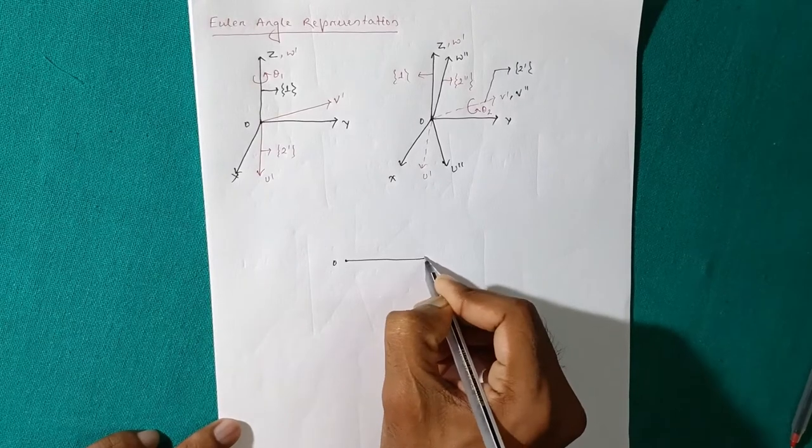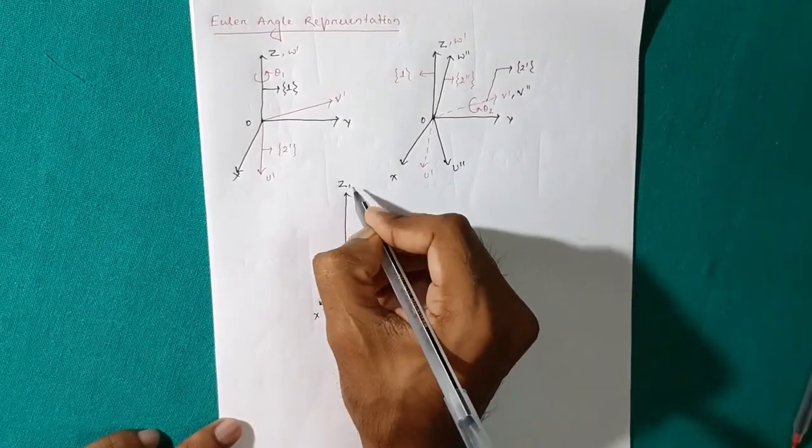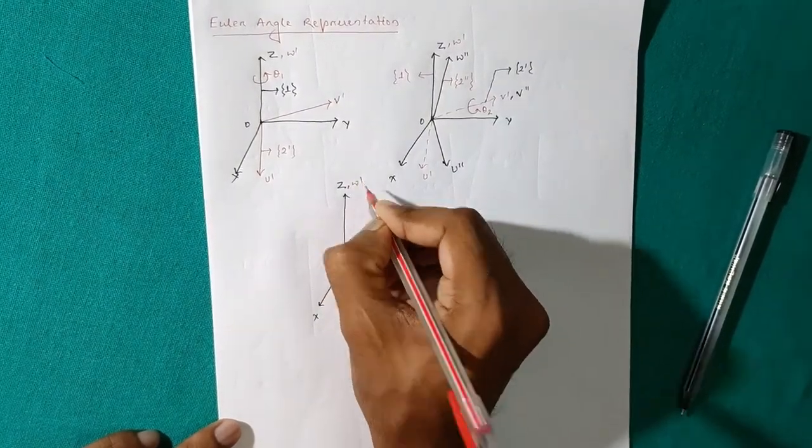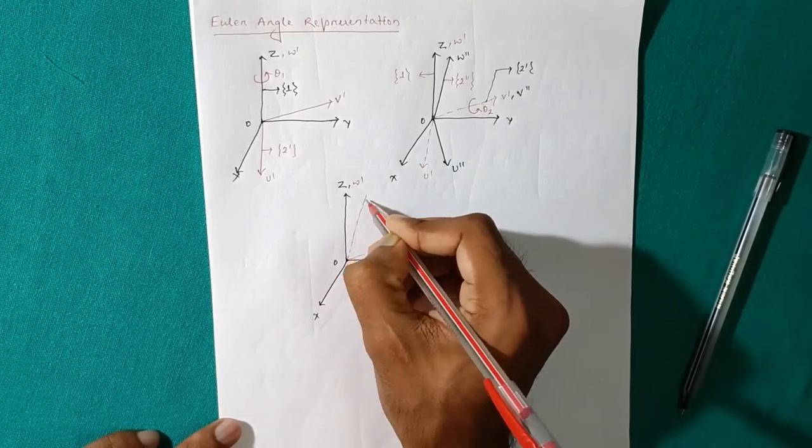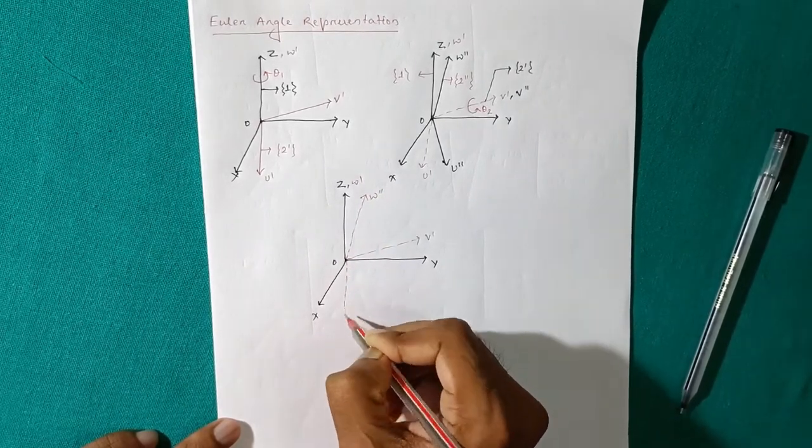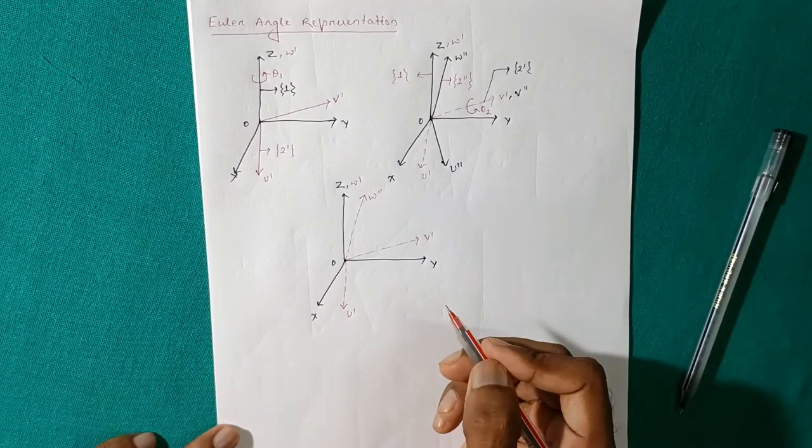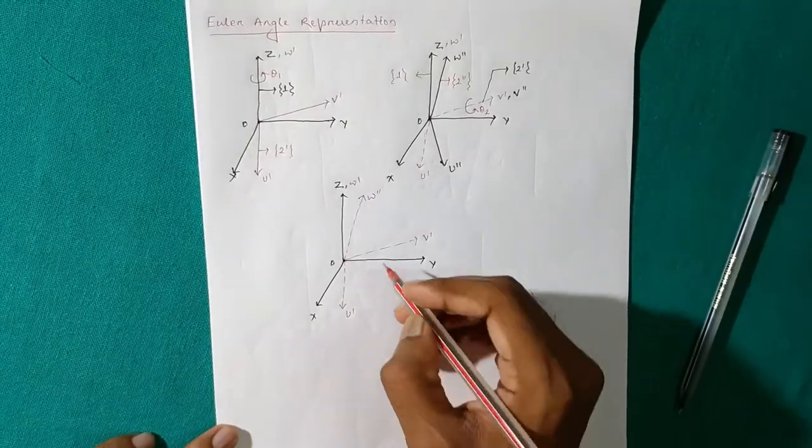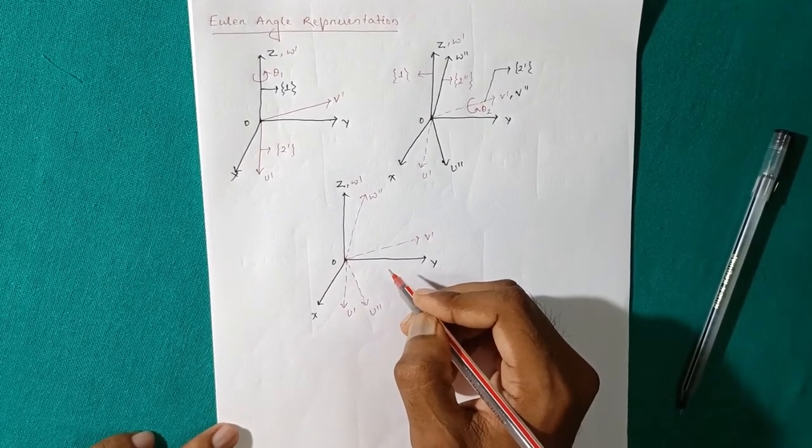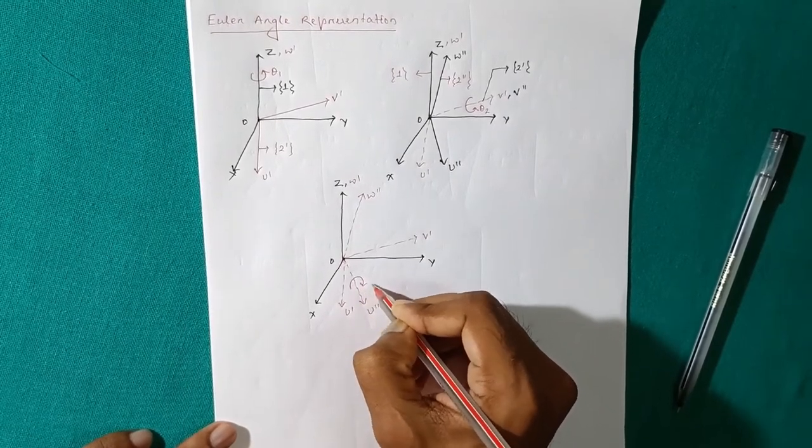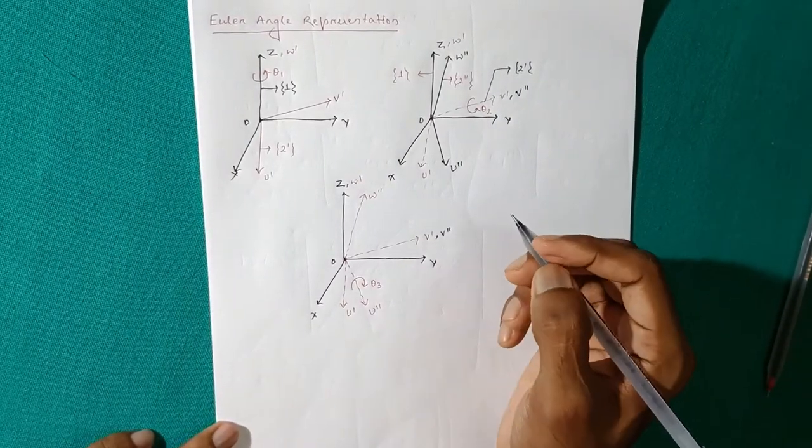This is O, this is x, y, and z. What we have got before? This is W prime, this is V prime, and this is U prime. So now, we will add an angle of rotation that is theta3 on this axis. What we will get? This is also V prime.